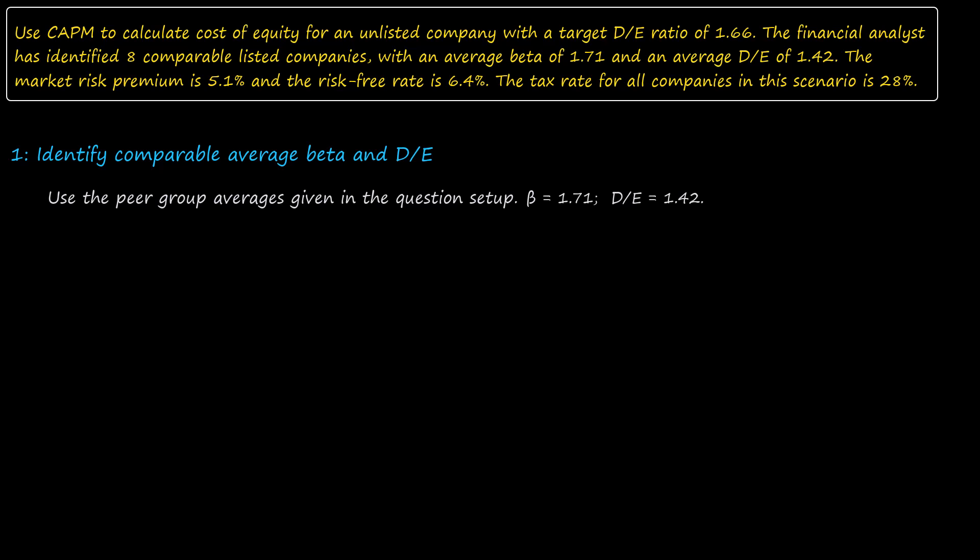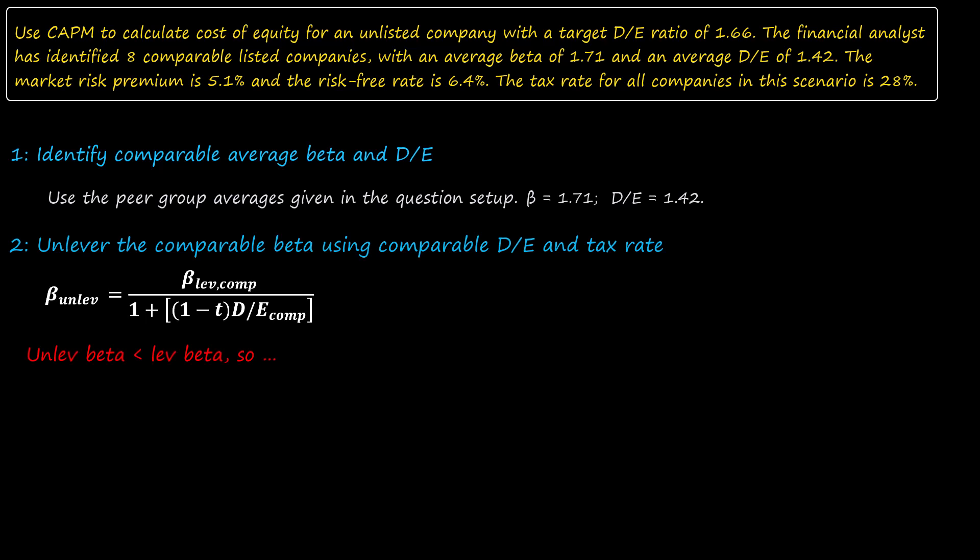Next, we recall that a beta which is unlevered is assumed to be levered beta. Therefore, the comparable average beta of 1.71 is in fact the peer group levered beta. So we need to unlever this using the first of the Hamada equations. For any company with debt in its capital structure, unlevered beta will always be less than levered beta. This principle might help you to get the equations the right way around.